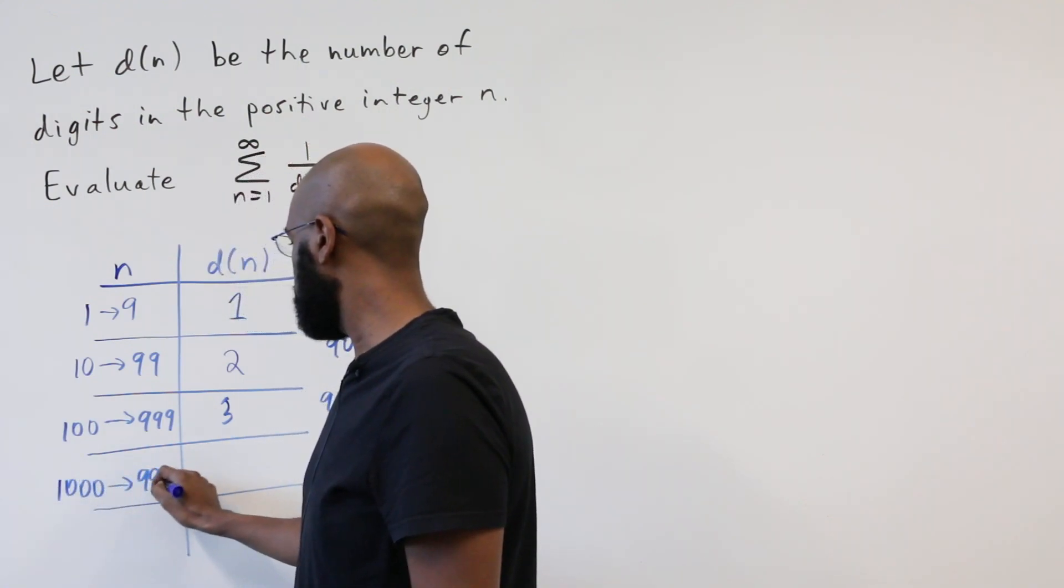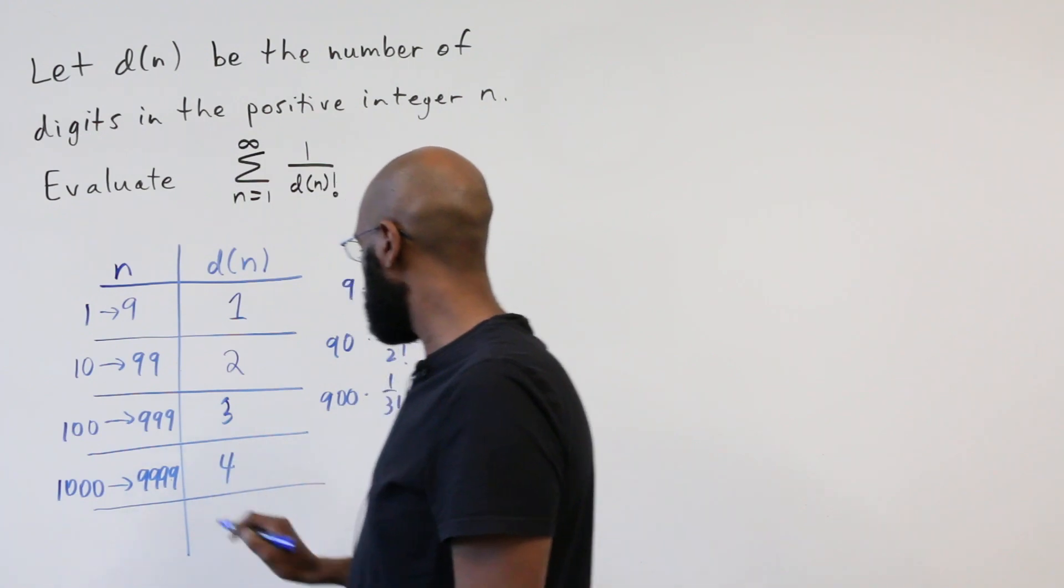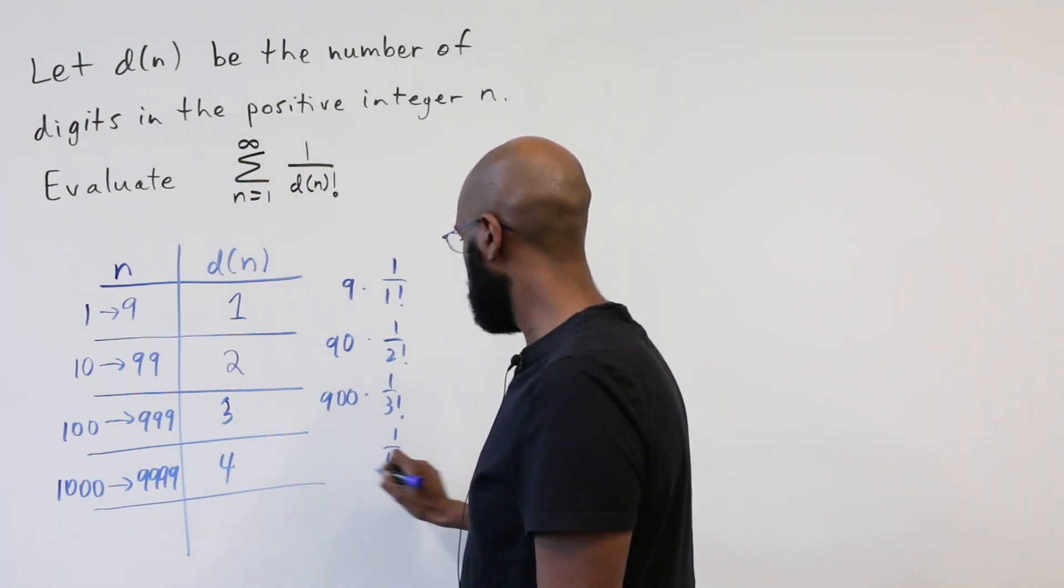And then 1,000 to 9,999, all of those are four digit numbers. So we'll see 1 over 4 factorial, 9,000 times, etc.